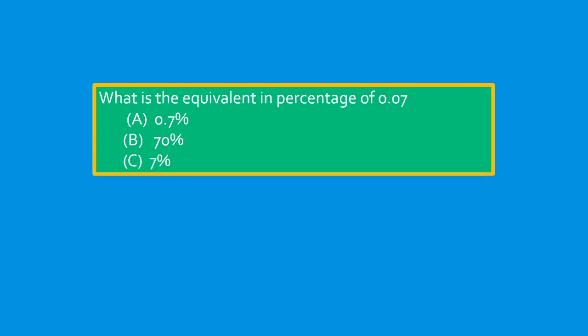What is the equivalent percentage of 0.07? A, 0.7%. B, 70%. C, 7%. The answer is C, 7%.